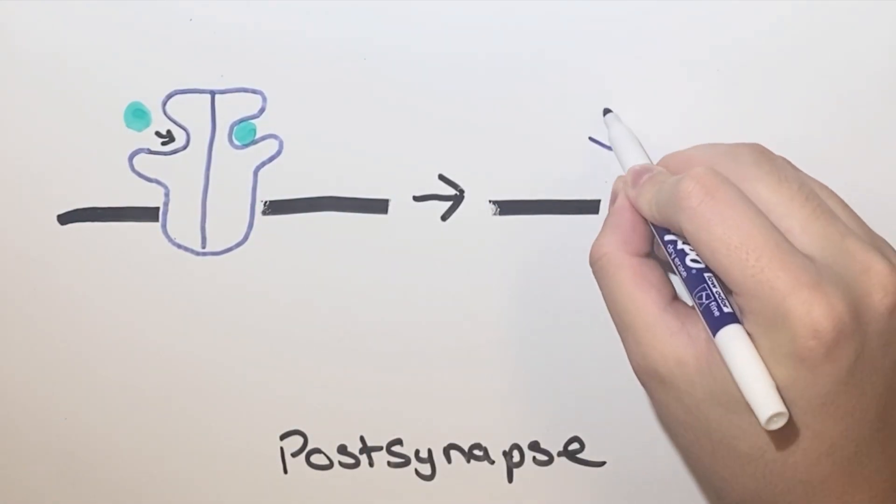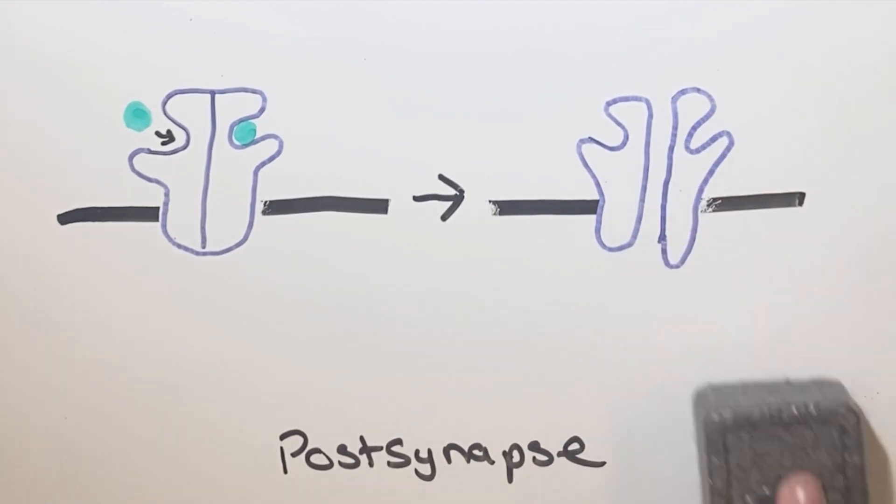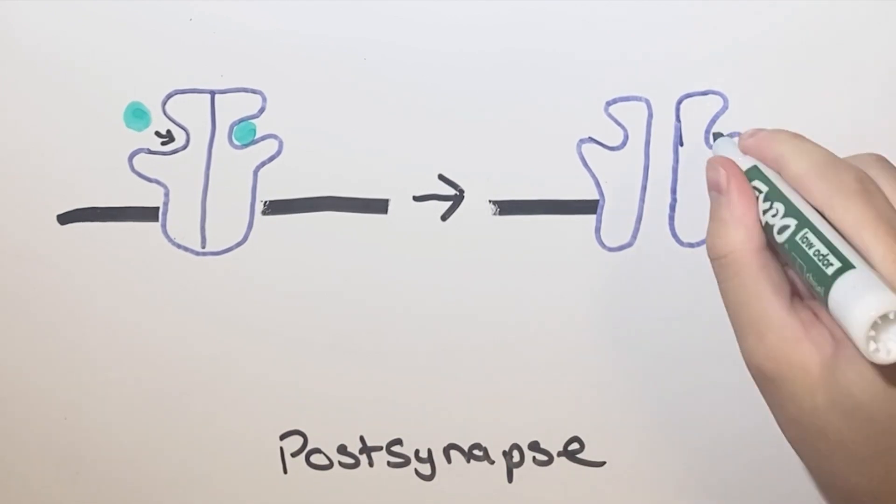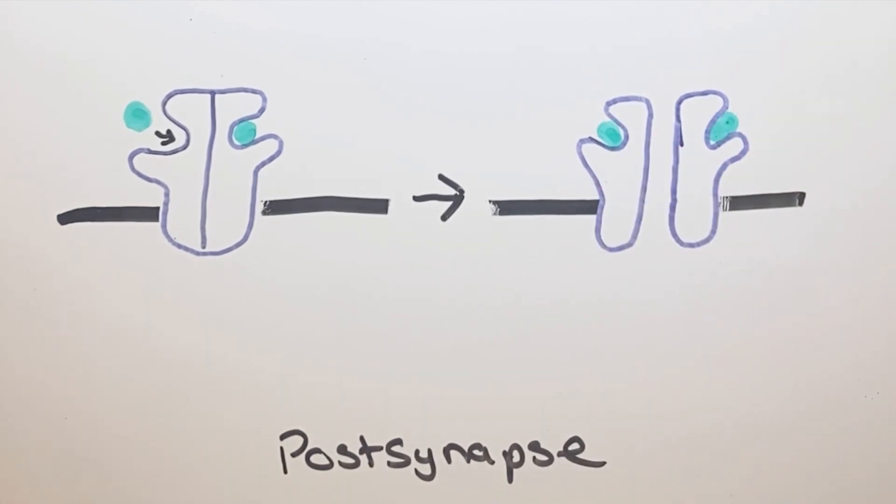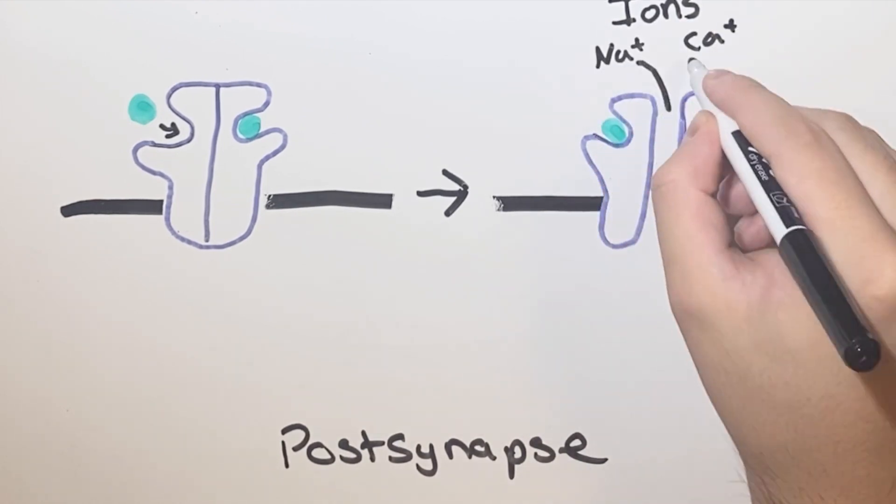In the case that the postsynaptic cell is also a neuron, ions will rush in and cause an action potential. More often though, acetylcholine is associated with a neuromuscular junction, which means that the postsynaptic cell is a skeletal muscle cell. So when the neurotransmitter binds to the receptor, it will allow for sodium to flow into the muscle, ultimately leading to a muscle contraction.